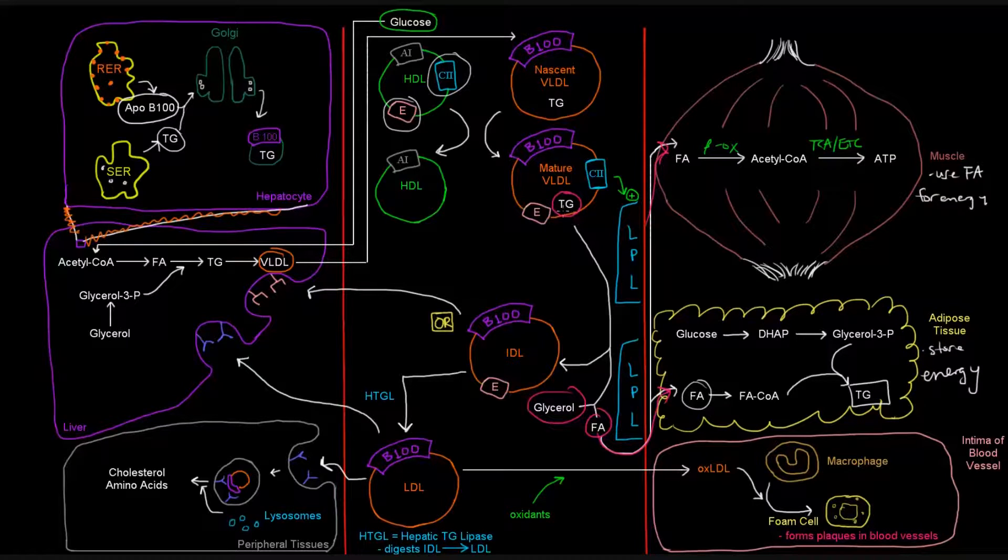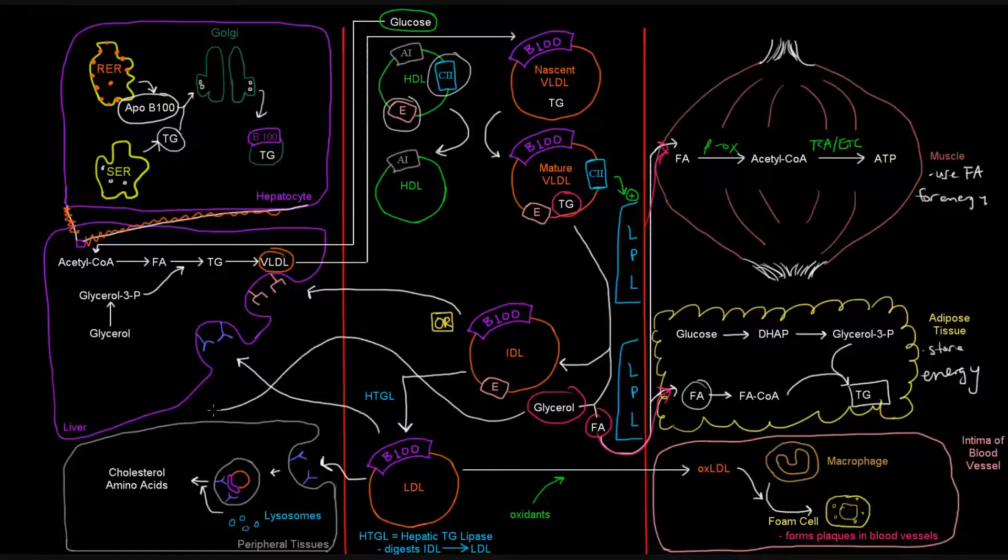And then when this triglyceride from the VLDL particle, this endogenous triglyceride, is cleaved into the glycerol and fatty acid, the glycerol can head back to the liver. And the fatty acids are taken up by the tissues. And then what's left over from the VLDL is its remnant, which is IDL, which we will see in the next video.